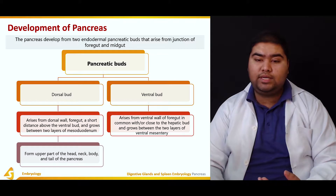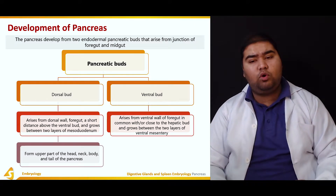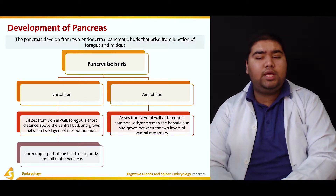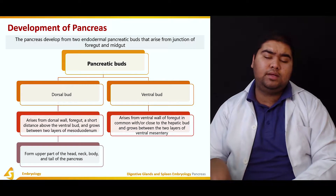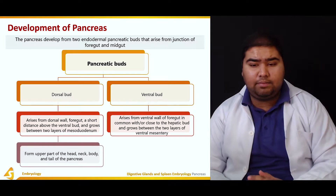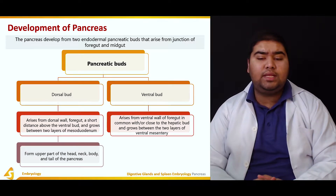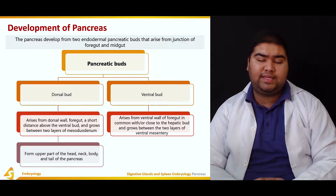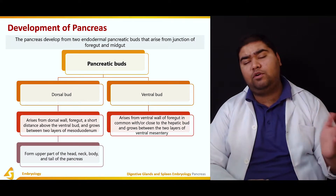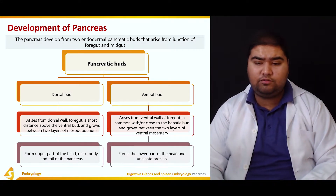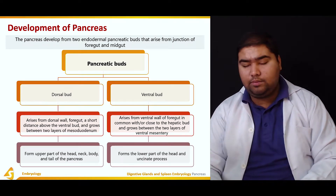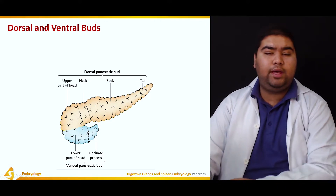The ventral bud arises from the ventral wall of the foregut, in common with or close to the hepatic bud, and it grows between the layers of the ventral mesentery. The ventral bud gives rise to the lower part of the head and the uncinate process of the pancreas.